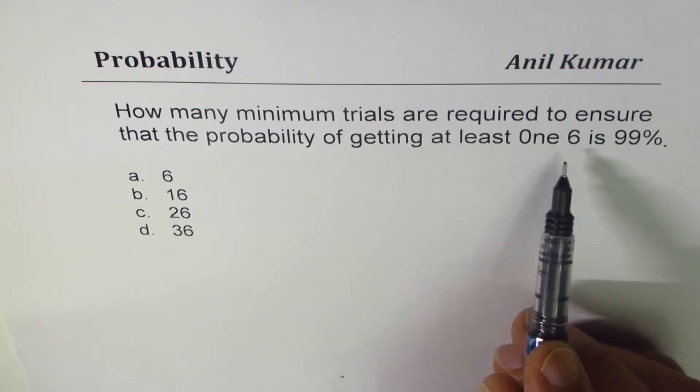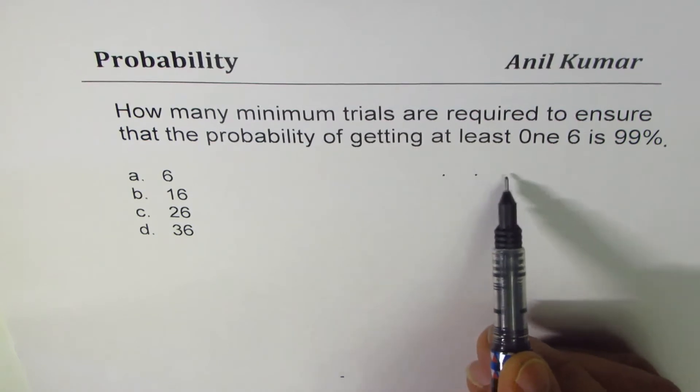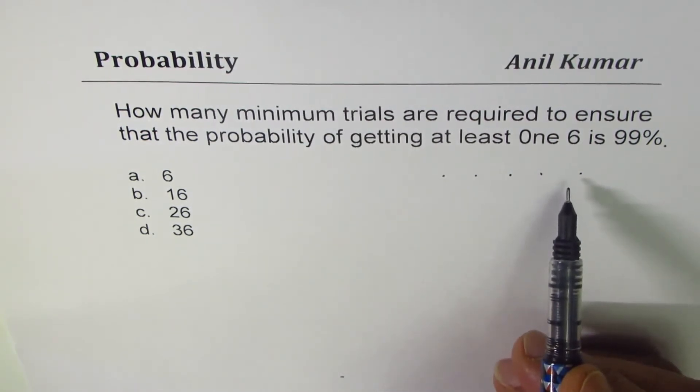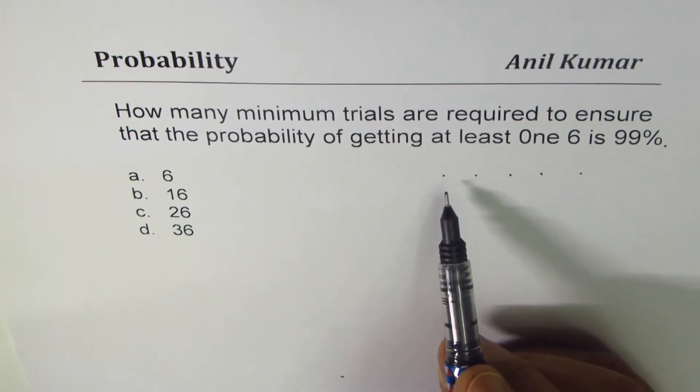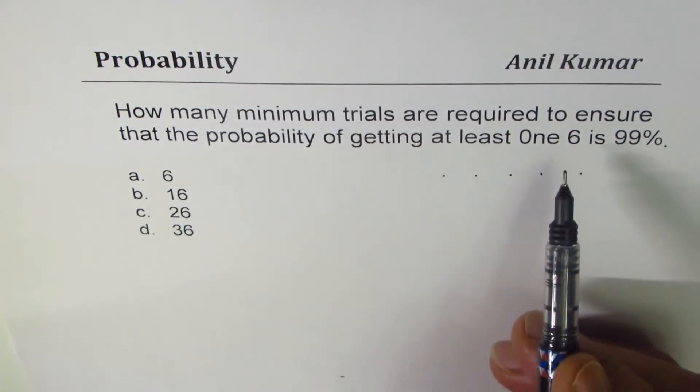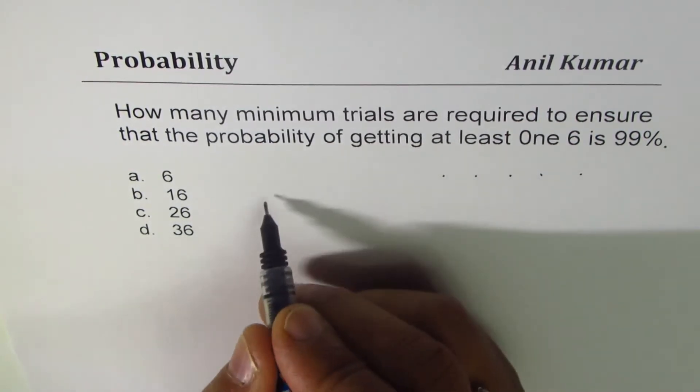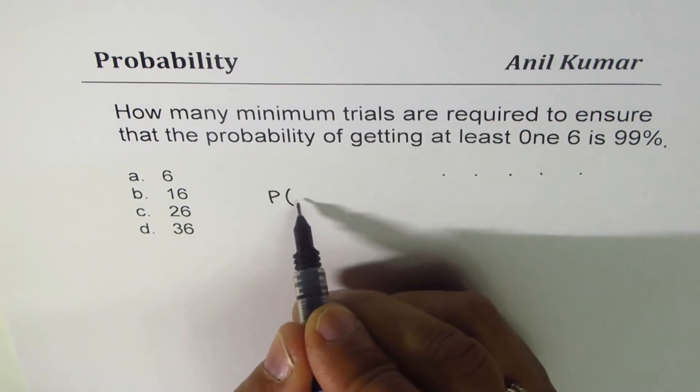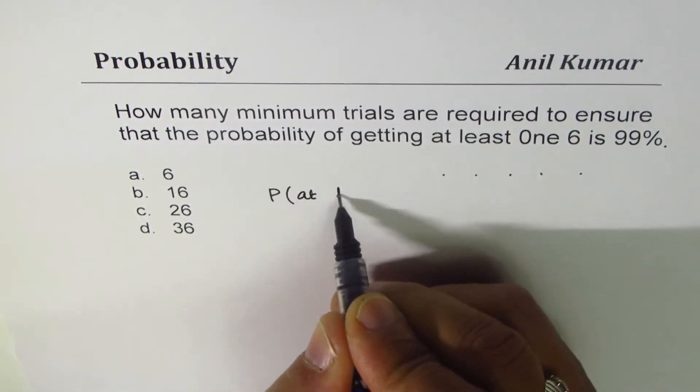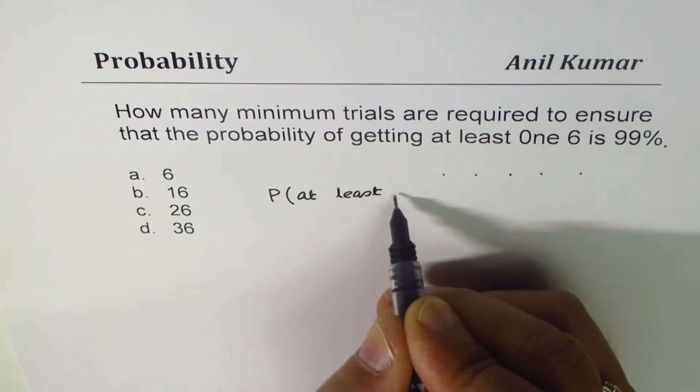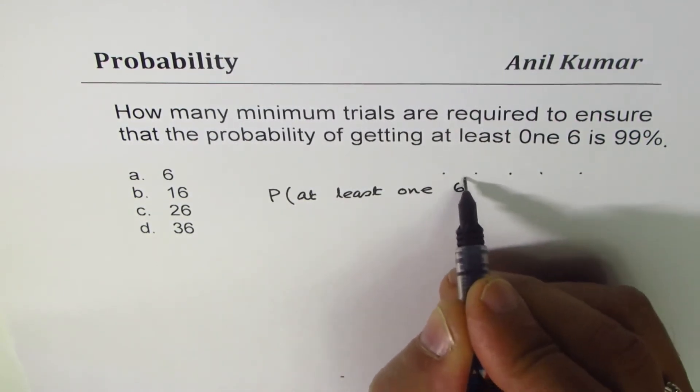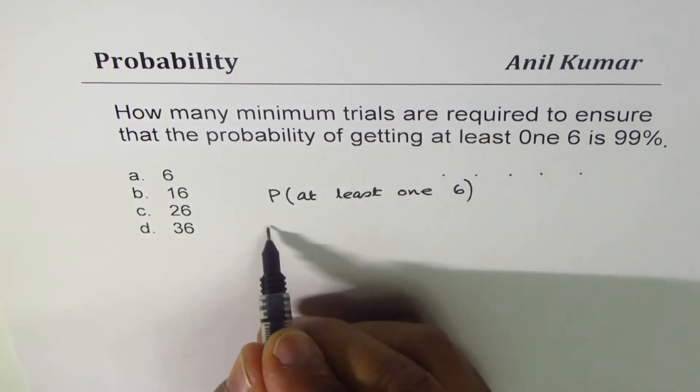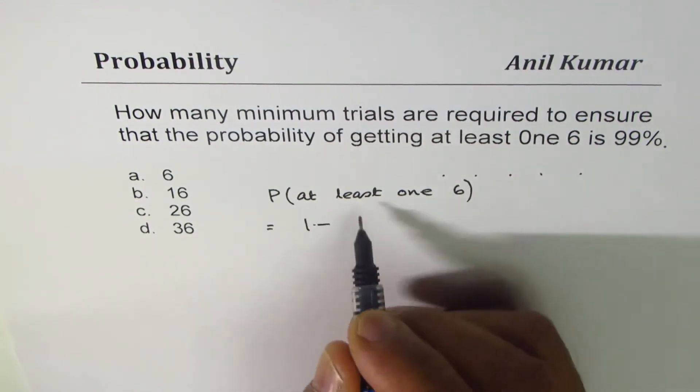Let there be n number of trials. At least one six means we are not getting six but all other numbers. So probability of at least one six also means that this equals one minus probability of not six.